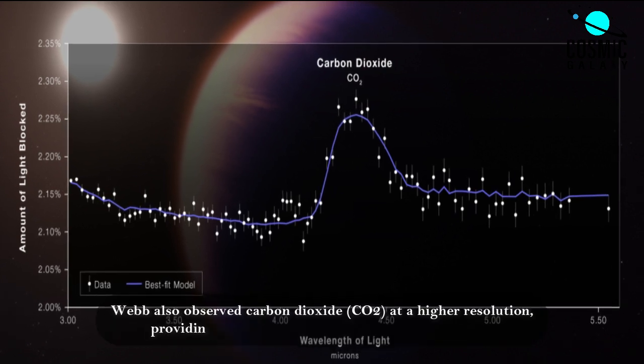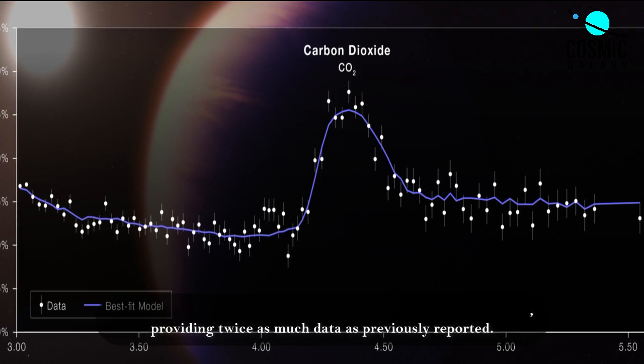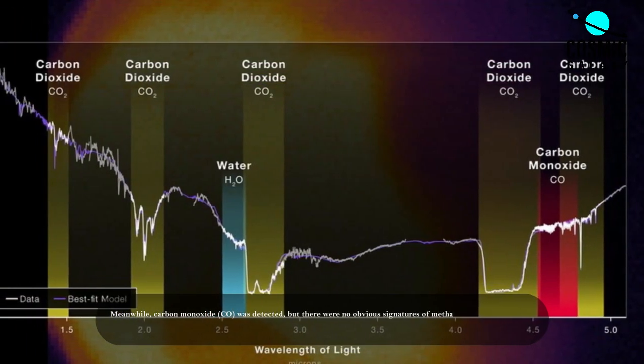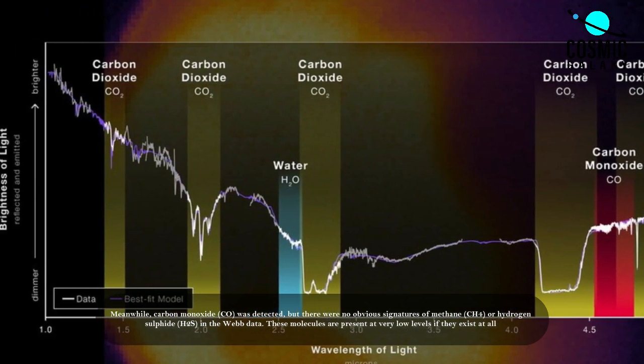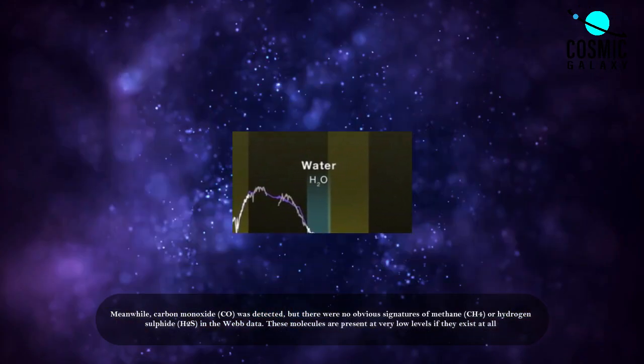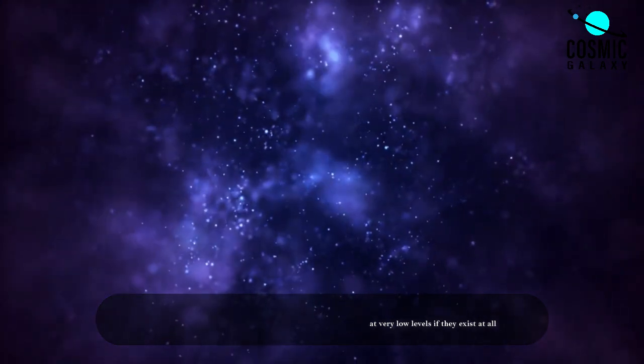Webb also observed carbon dioxide at a higher resolution, providing twice as much data as previously reported. Meanwhile, carbon monoxide was detected, but there were no obvious signatures of methane or hydrogen sulfide in the Webb data. These molecules are present at very low levels if they exist at all.